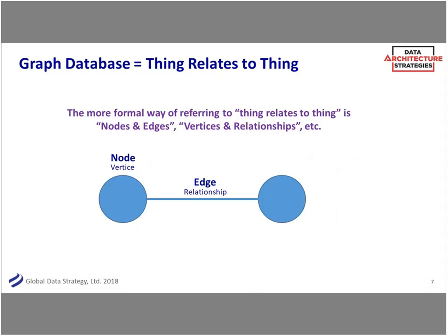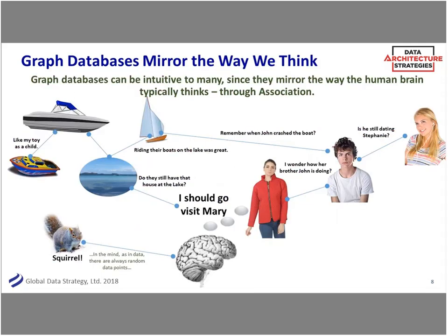That's often where you get insights - not necessarily the data itself, but how does that data relate to other things. One reason I'm a fan of graph databases is that in a lot of ways, it mimics how we think. We sort of have a thought - I'm going to go visit Mary - and that links to a lot of other things: Mary has a brother John, is he still dating Stephanie? Then maybe I remember when we crashed a boat, do we still have that house at the lake? And then your brain goes to squirrel.